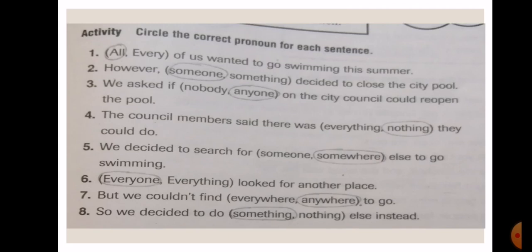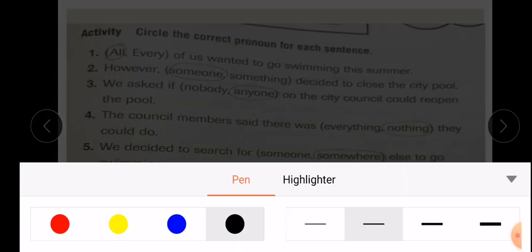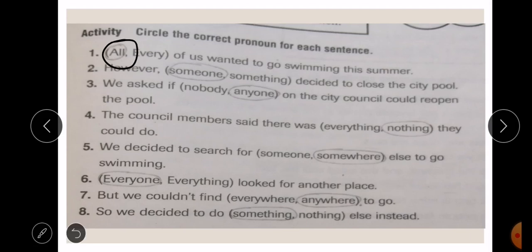Moving on to page number 259, let's do the activity. Circle the correct pronoun for each sentence. Let's look at the first one: All or every of us wanted to go swimming this summer. Every of us does not sound correct. All of us wanted to go swimming this summer. So the correct answer is all. However, someone or something decided to close the city pool. It has to be someone, because someone decided to close the city pool. The correct answer is someone decided to close the city pool. We asked if anyone on the city council could reopen the pool.